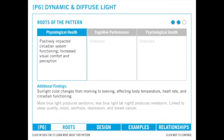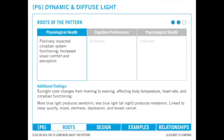More blue light produces serotonin, whereas less blue light, which occurs at night, produces melatonin. The balance of serotonin and melatonin can be linked to sleep quality, mood, alertness, depression, breast cancer, and other health conditions.